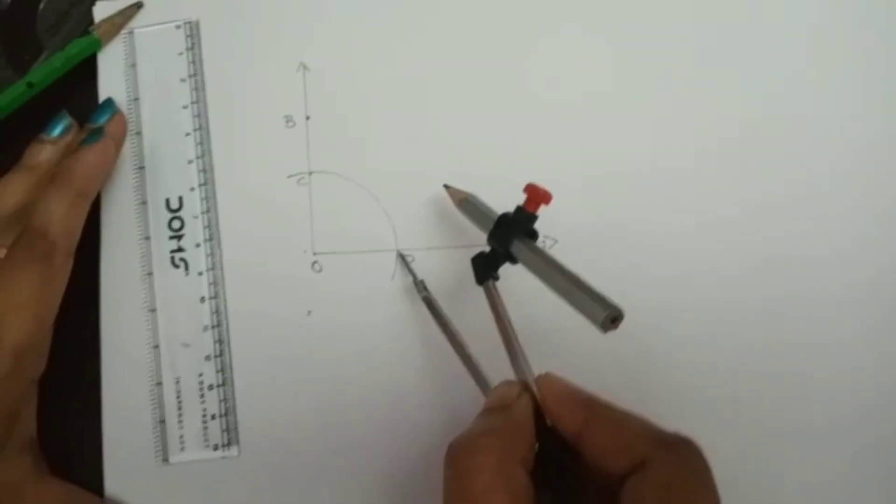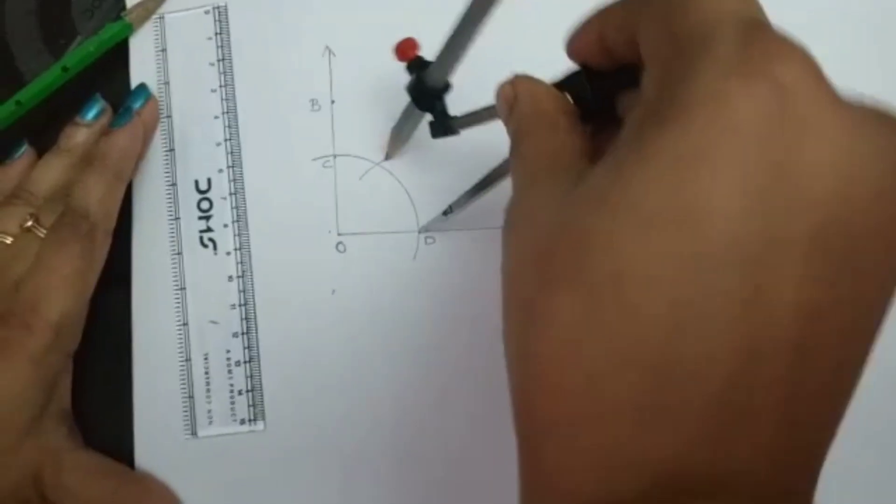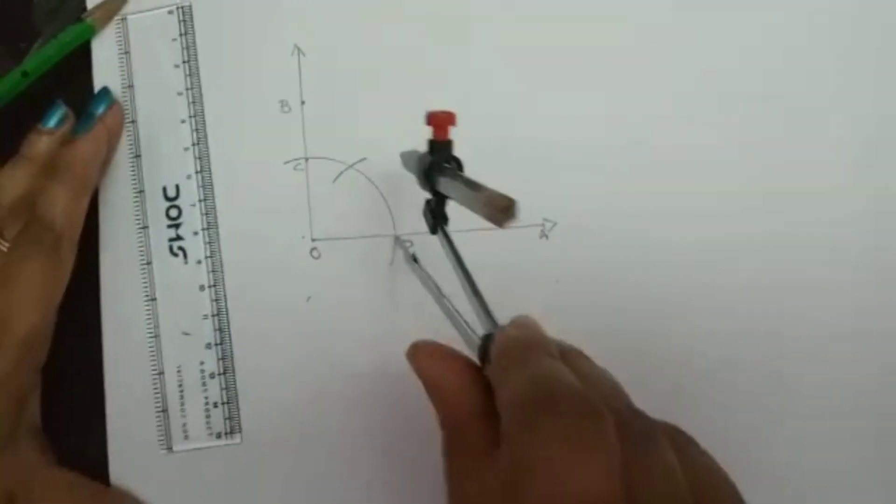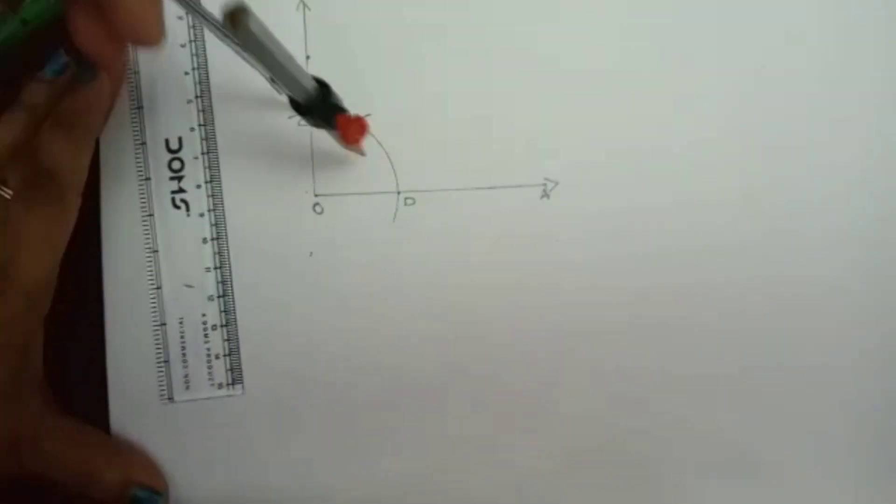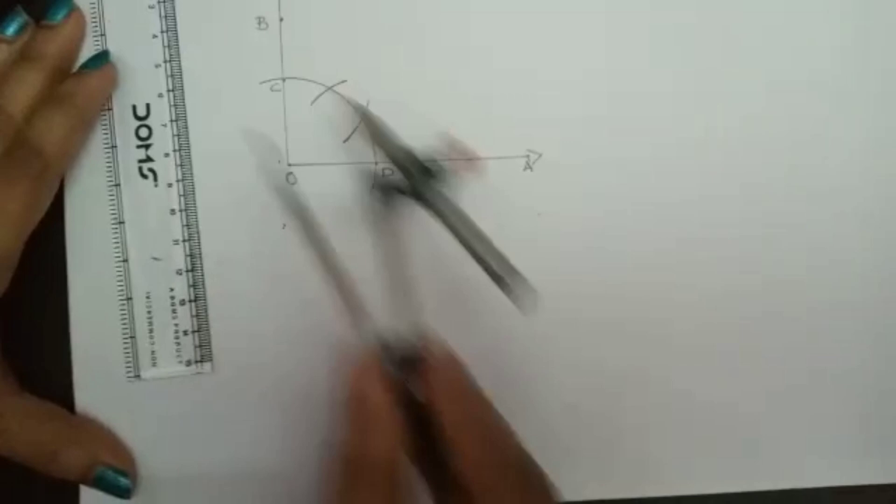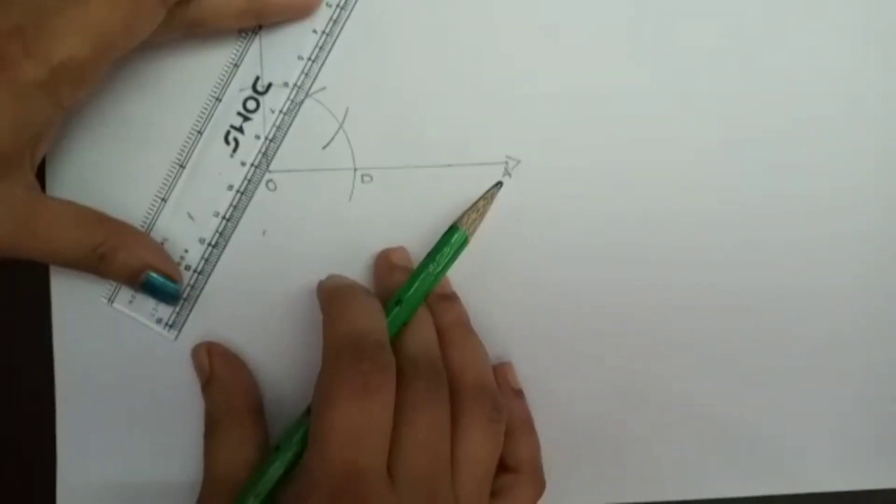With C as center, without changing the radius, I am drawing an arc. With C as center, draw an arc which passes through the curve CD. Now we got two more intersecting lines.